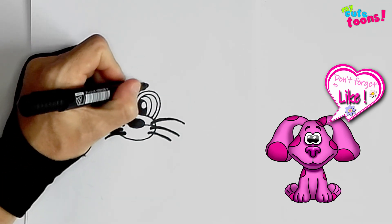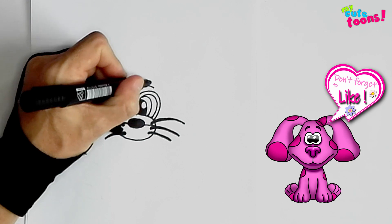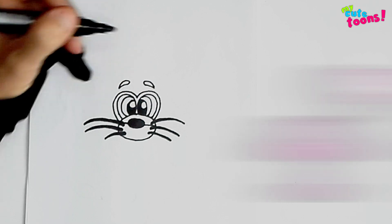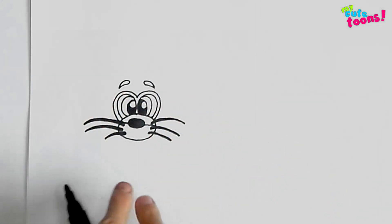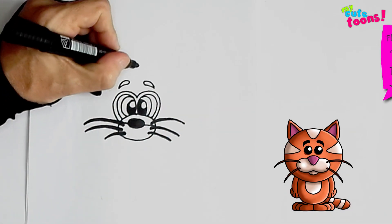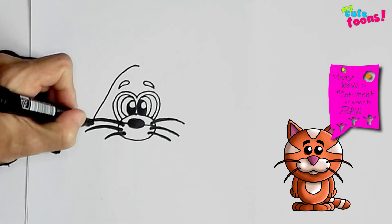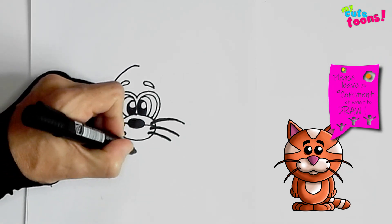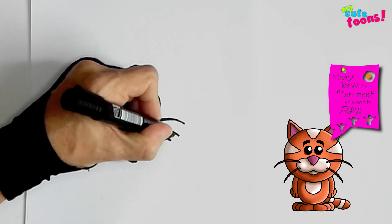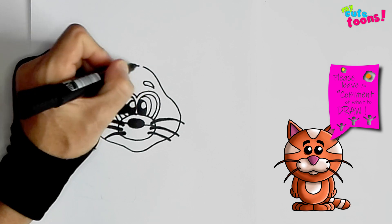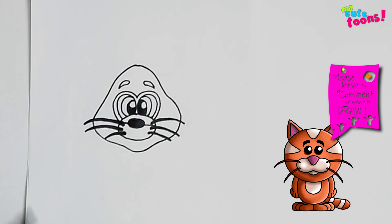Right above the glasses we're going to draw the eyebrows. Two little eyebrows. There we go. And now we can draw the head of Magenta. So we're going to draw a nice pear shape.